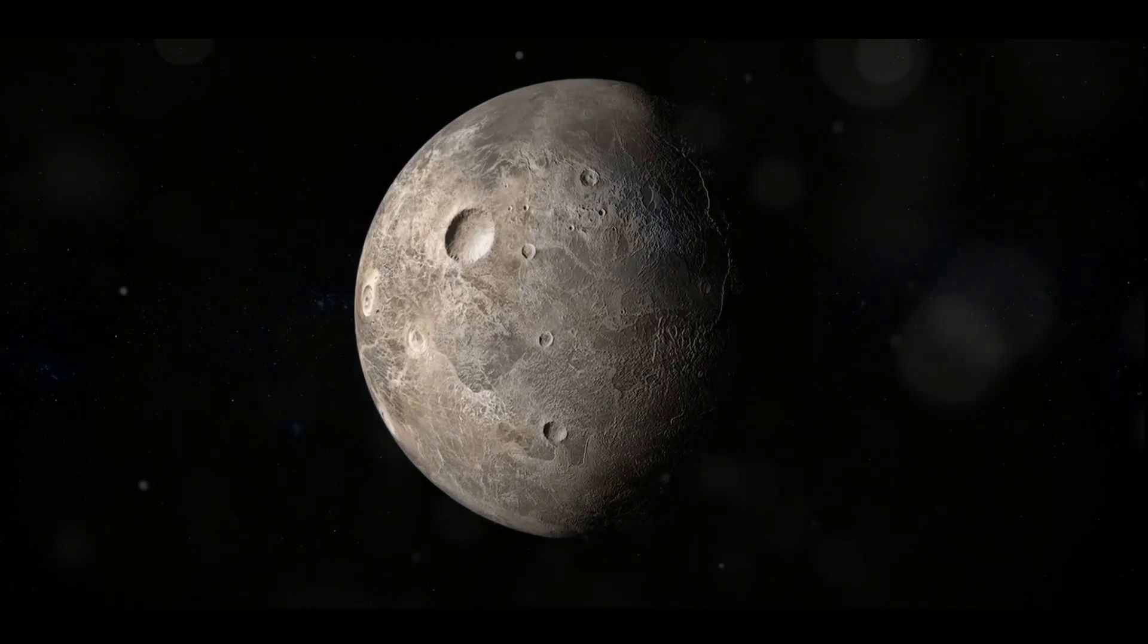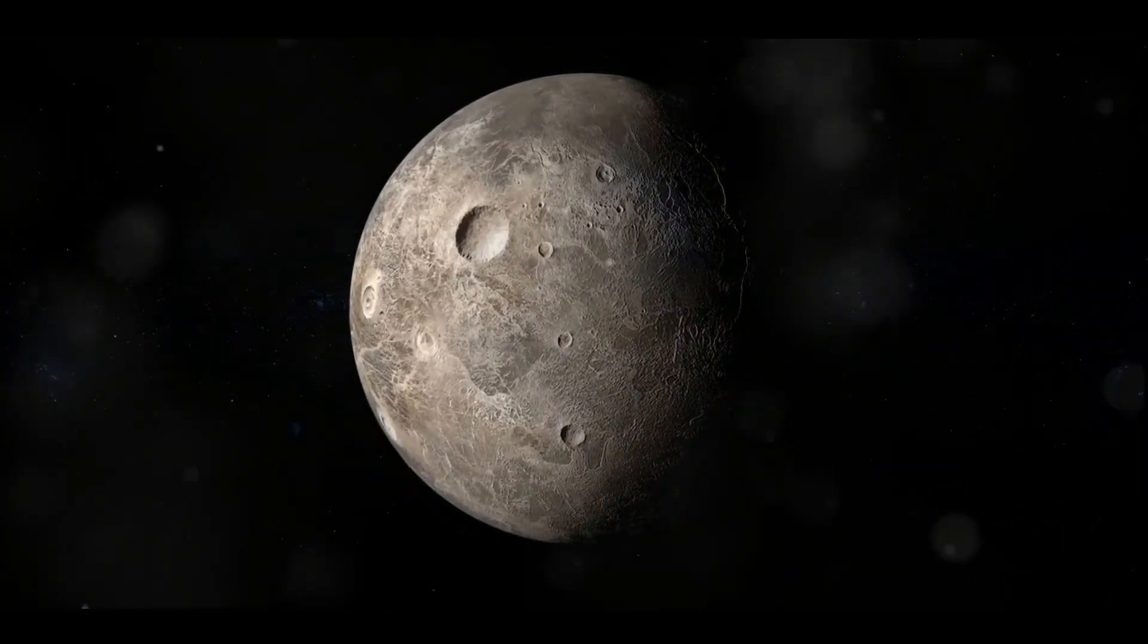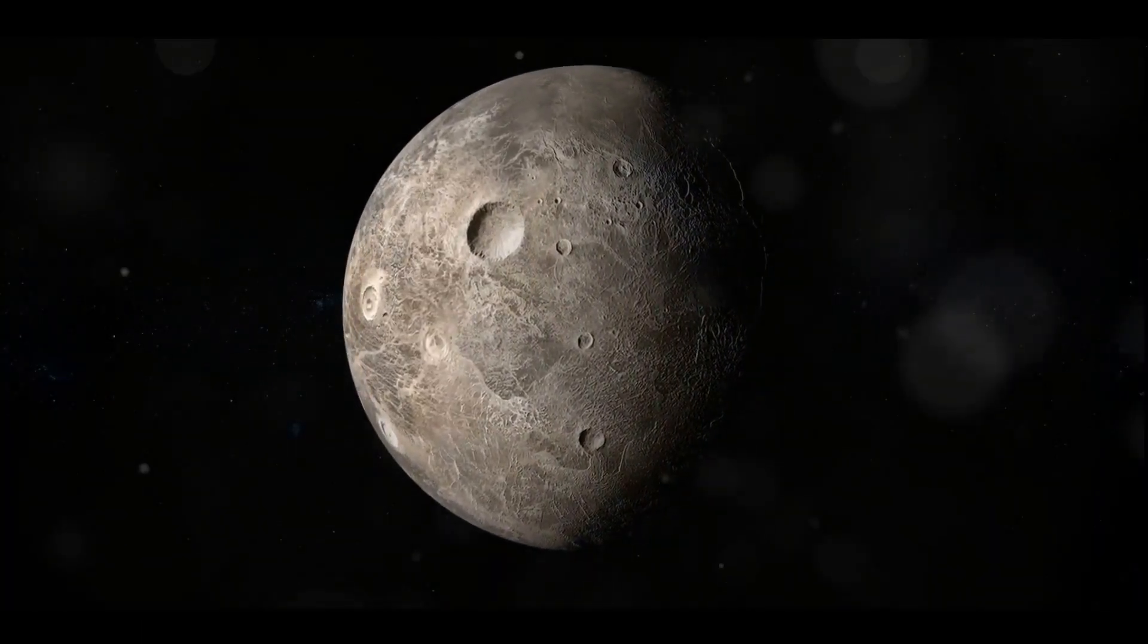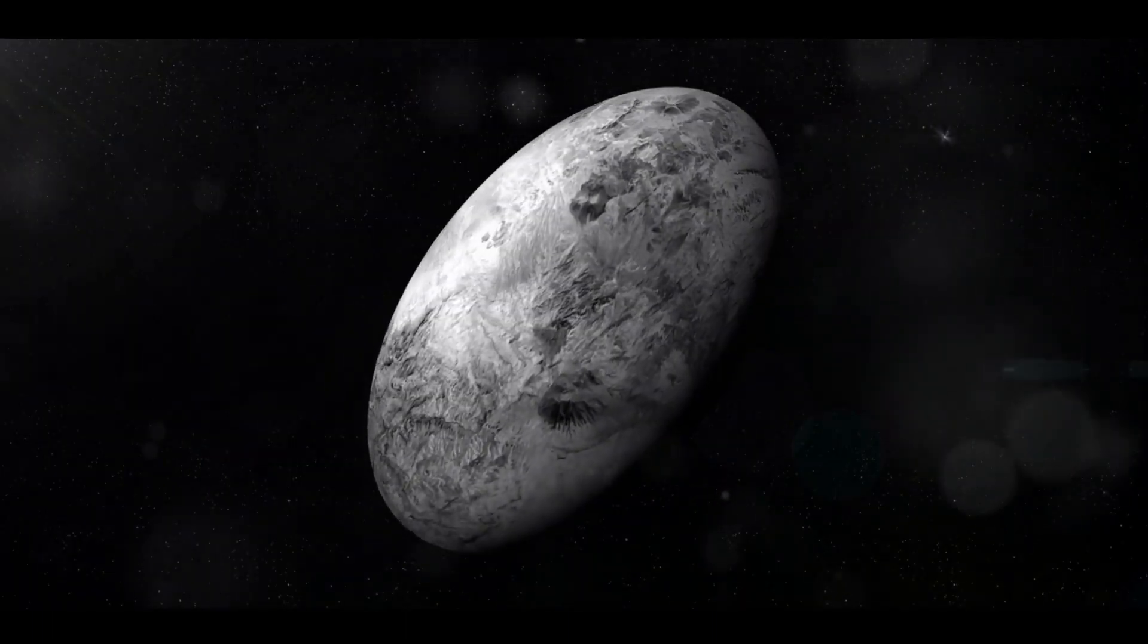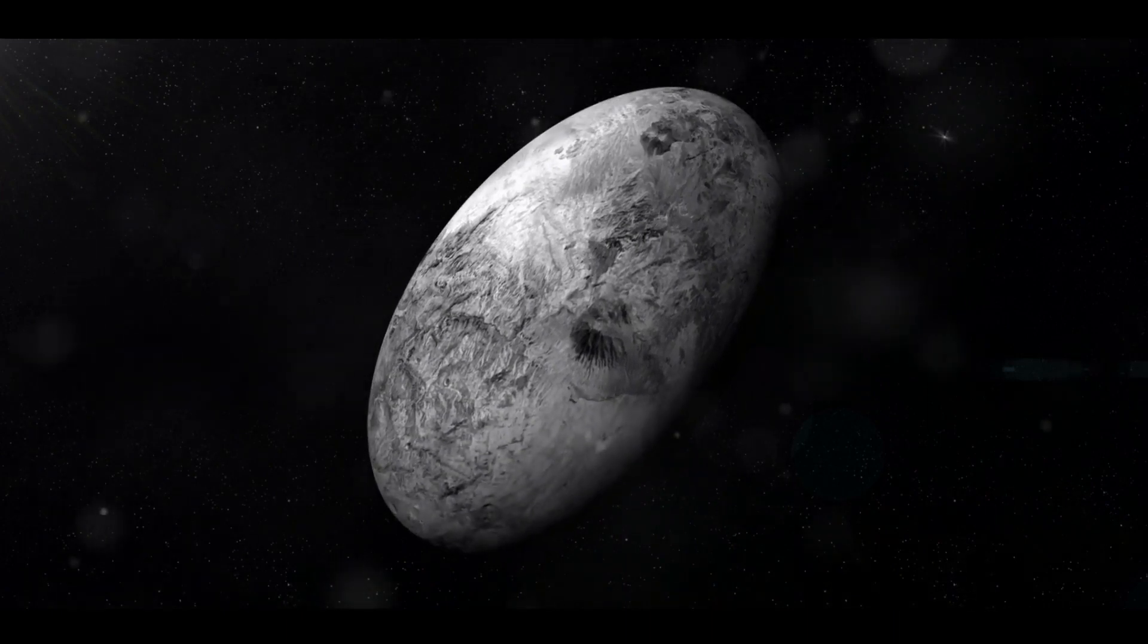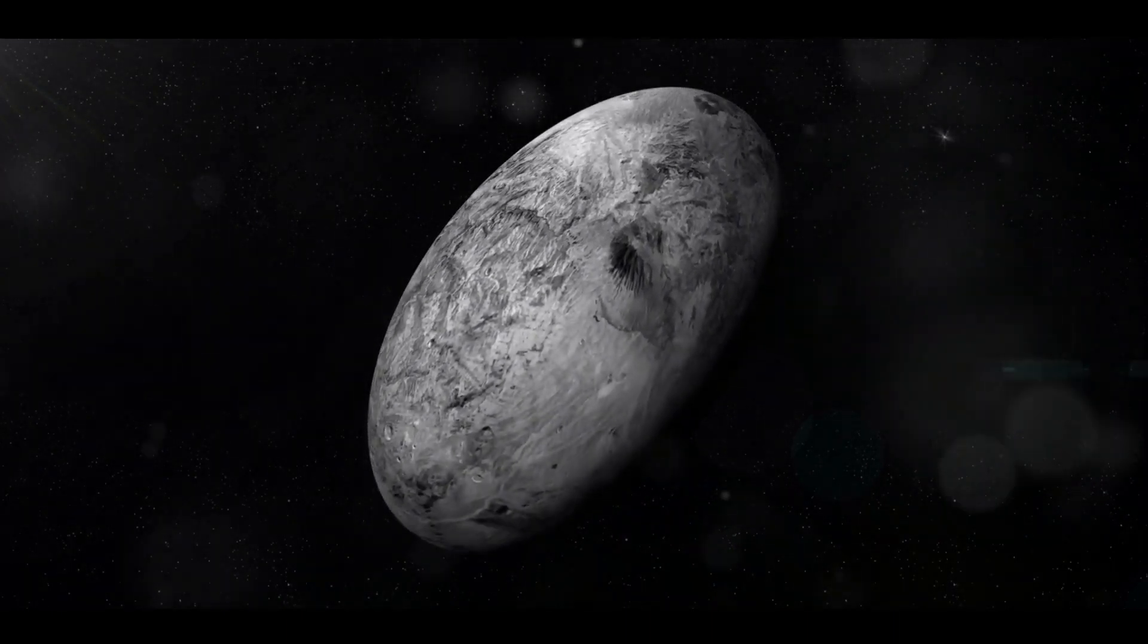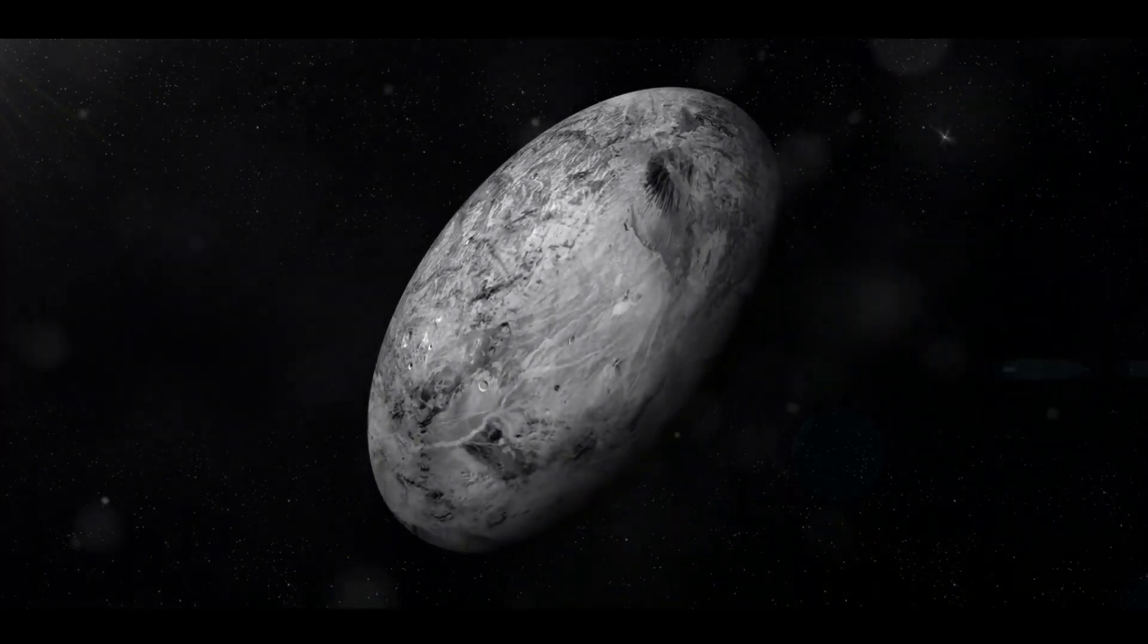Haumea is quite the oddball as it spins incredibly fast, completing a full rotation in less than four hours. This rapid rotation gives Haumea its unique elongated shape, more akin to a rugby ball than a sphere.